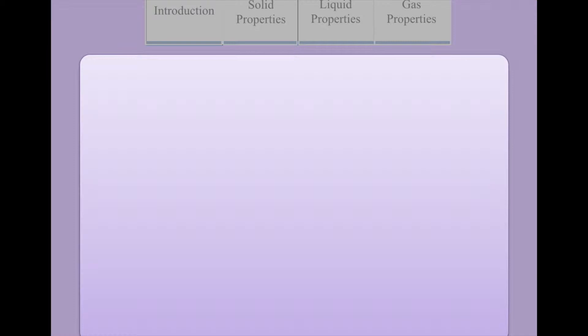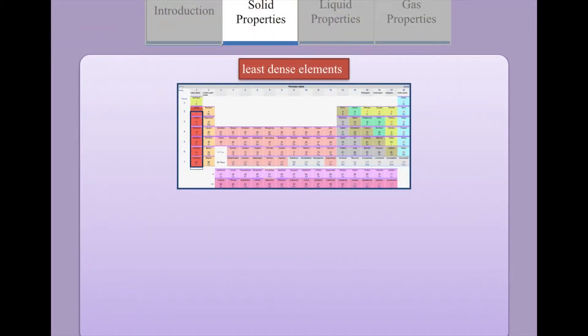Because they have the lowest atomic weight and the largest atomic radius of all the elements in their period, the alkali metals are the least dense elements in the periodic table.